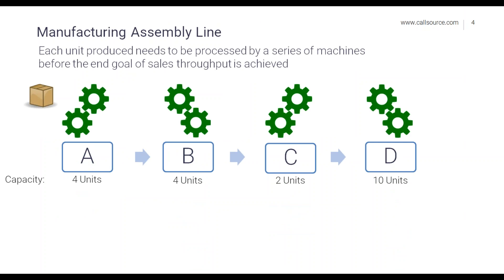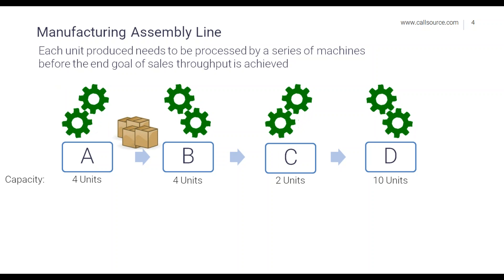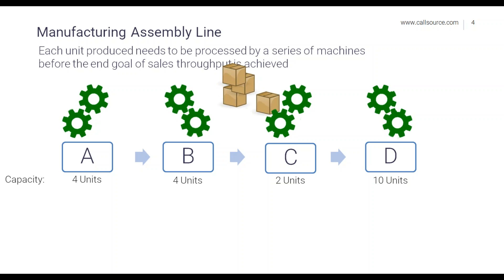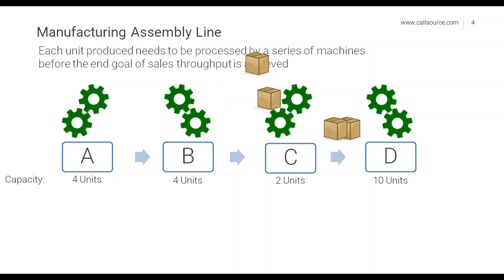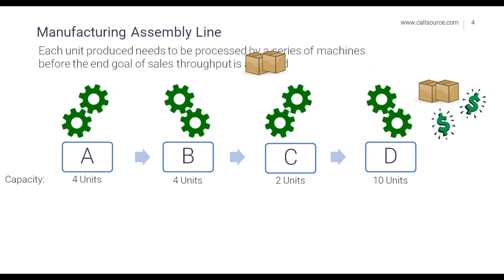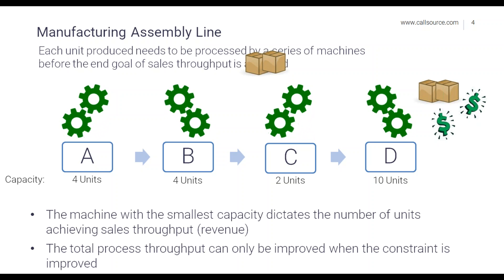Business growth can be likened to a manufacturer's assembly line. Each unit produced needs to be processed by a series of machines before the end goal is achieved, and each is dependent on the next. As shown in the animation here, the machine with the smallest capacity actually dictates the number of units produced. In this case, C is the constraint point — only two units will be produced even though D has a capacity of ten units. Even maximizing A and B to their fullest potential will still yield only two units, because the total process can only be improved when the constraint is improved.